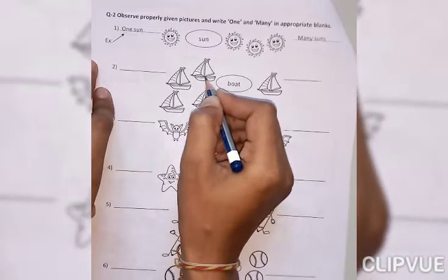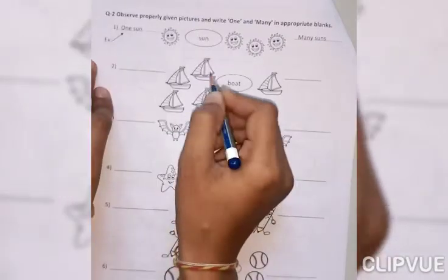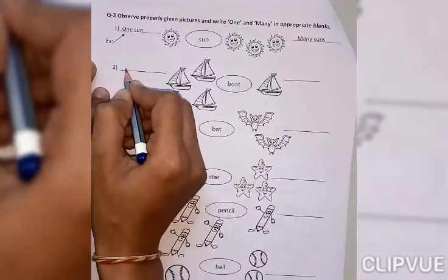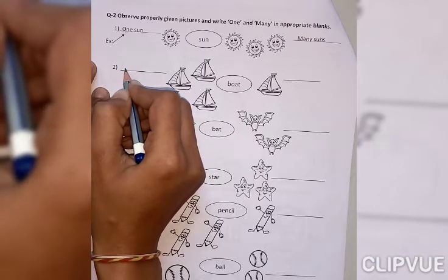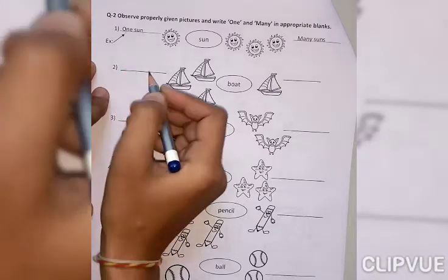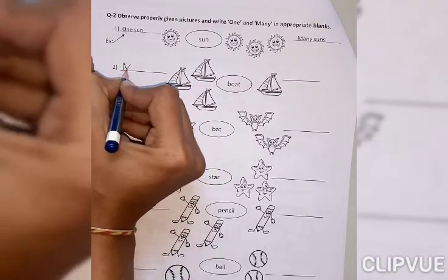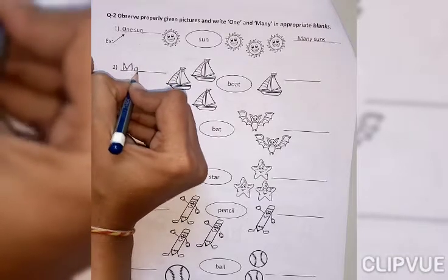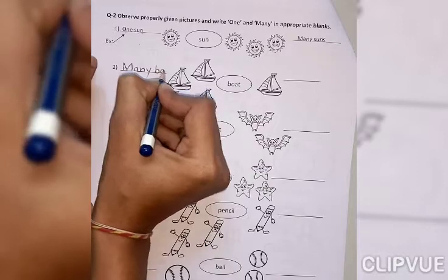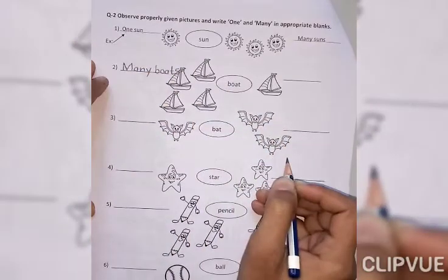Which picture is this? Boat. And how many boats are here? One, two, three, four. क्या लिखेगे यापे हम? What we write here? One boat or many boats? Yes, very good. Many boats. So, everyone write here many boats. M-A-N-Y. B-O-A-T-S. Many boats.